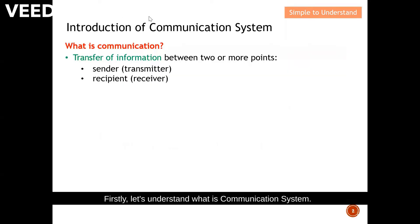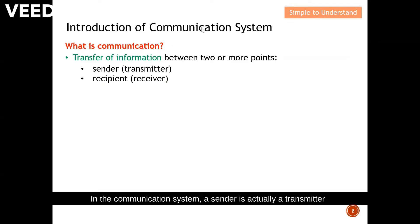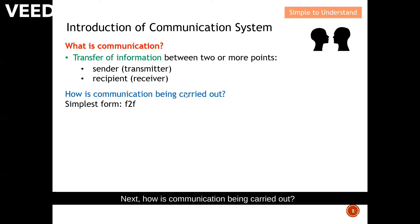Firstly, let's understand what a communication system is. A communication system is a transfer of information between two or more points. Imagine you write a letter and send it to your friend — you are the sender and your friend is the recipient. In a communication system, a sender is actually a transmitter and a recipient is actually a receiver.